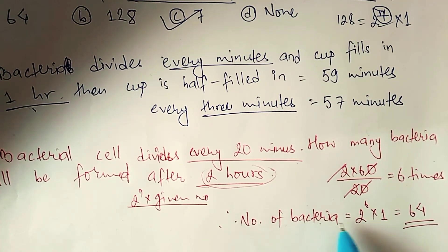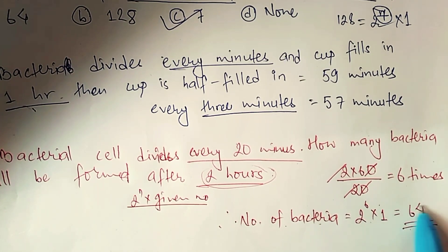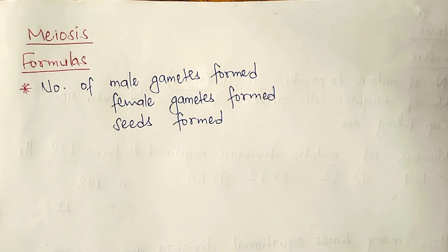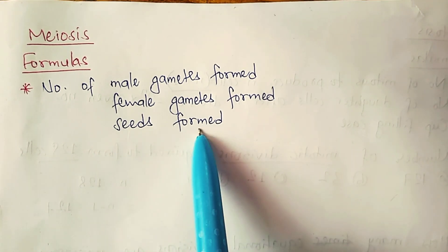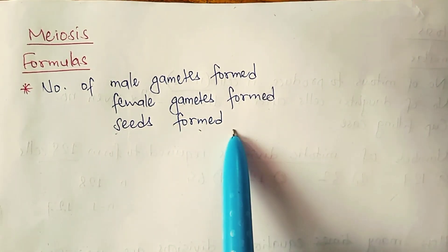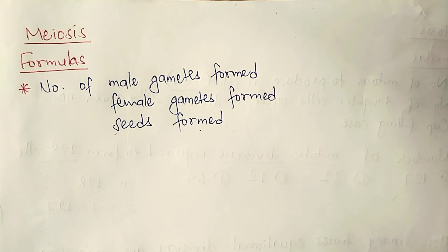Now let's discuss meiosis. In meiosis, a cell only divides once, so there is no formula for the number of times meiosis occurs. There is only one formula each to find the number of male gametes, female gametes, or seeds formed.